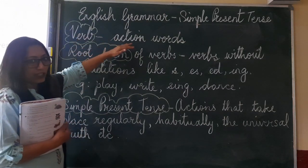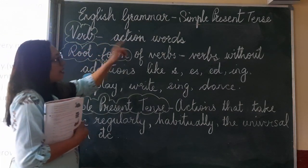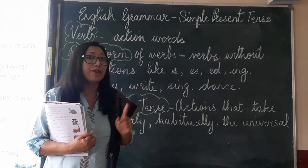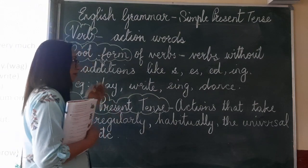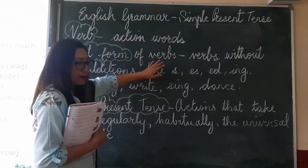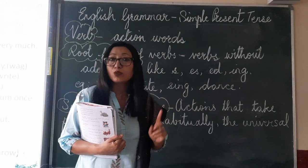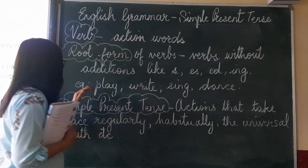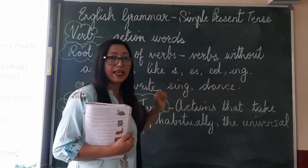A verb is an action word. Then you have tense. What is the tense of a verb? The tense of a verb shows the time of action. The root form of verbs are verbs without endings like s, es, ed, and ing.